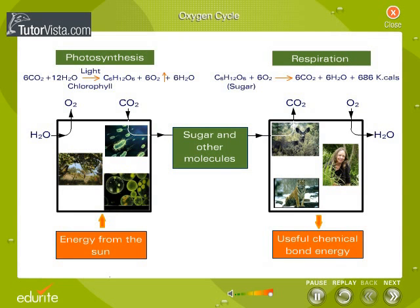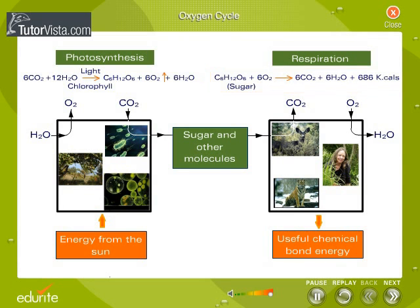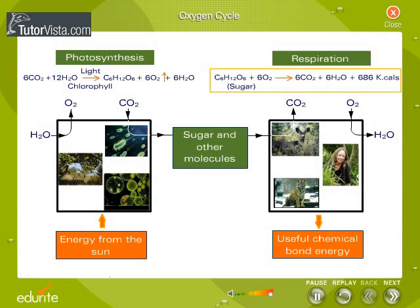Photosynthesis uses carbon dioxide and water as raw materials to produce sugars and other organic molecules. These molecules, in turn, serve as food for other organisms. All of these organisms carry out respiration, a process that uses oxygen to release carbon dioxide from the same carbon atoms contained in the food. Thus, one process uses carbon dioxide and releases oxygen, whereas the other uses oxygen and releases carbon dioxide. These are the two major processes that help to maintain the balance of oxygen in the atmosphere.